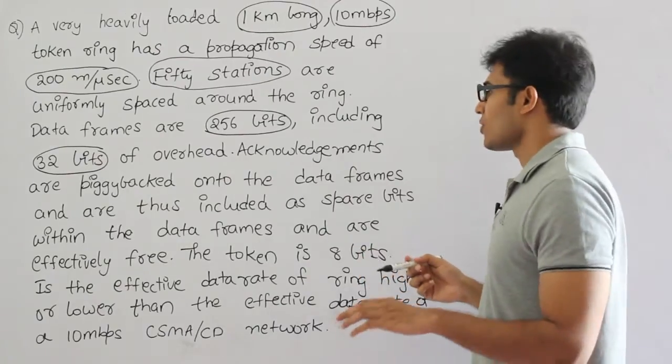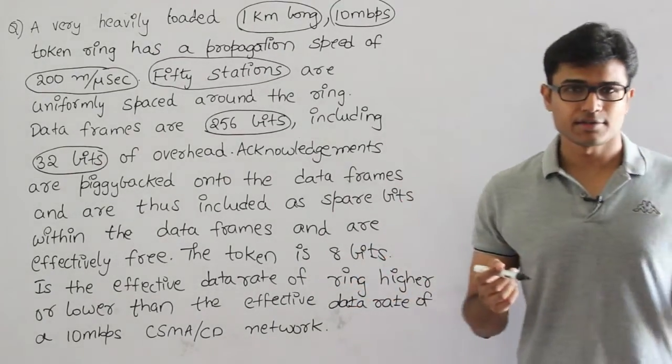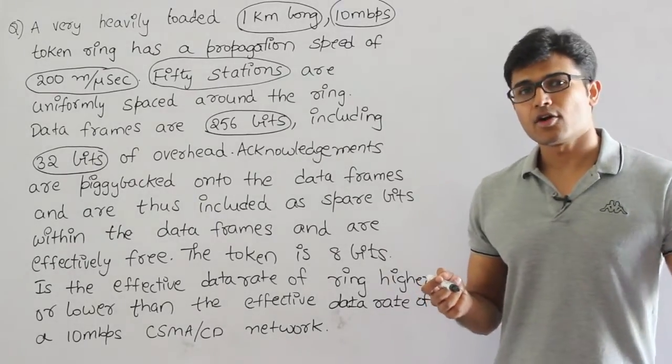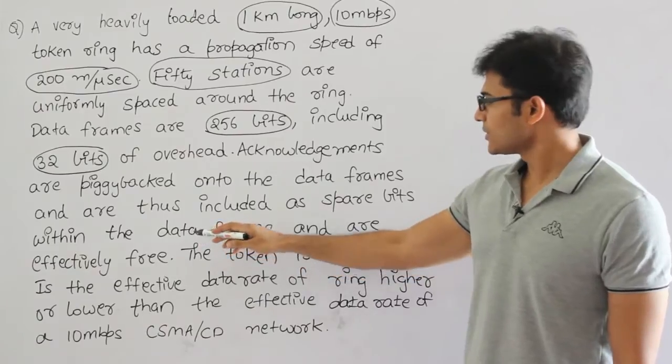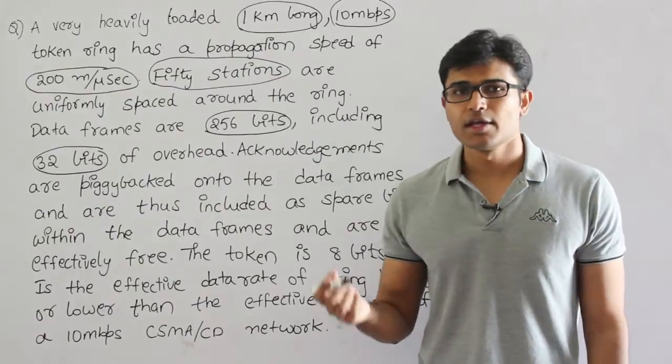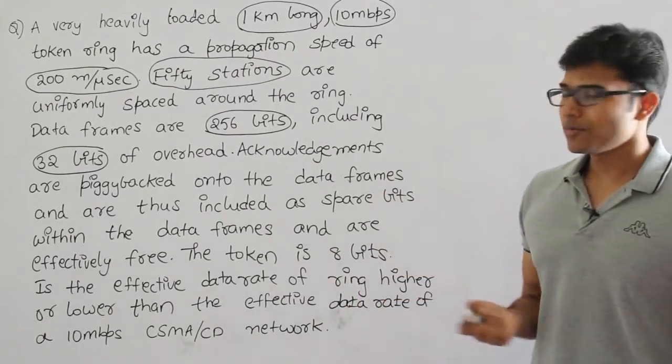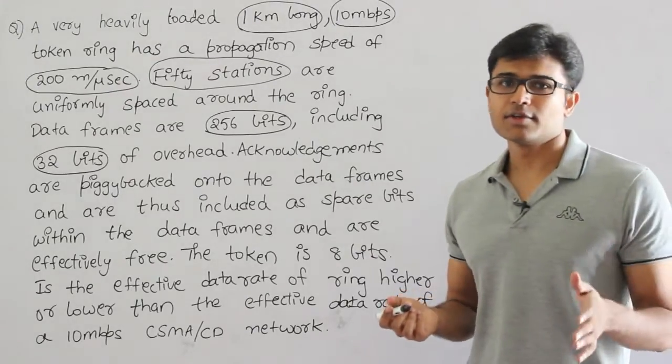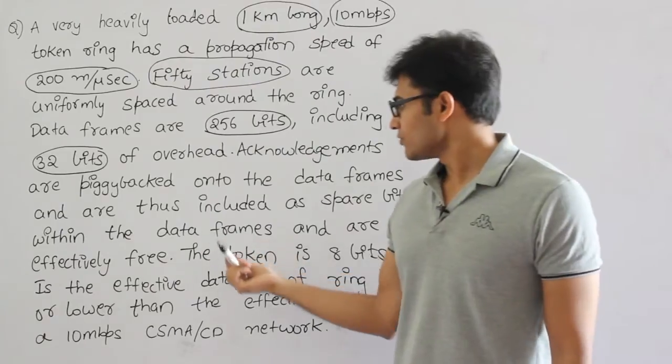Acknowledgements are piggybacked onto the data frames, which means acknowledgements are used in A and C bits available and copied. They are already piggybacked and thus are included as sparse bits within the data frames, which means there is no overhead because of the acknowledgements. The meaning of piggyback acknowledgements is nothing is wasted because of acknowledgements, and they are effectively free.